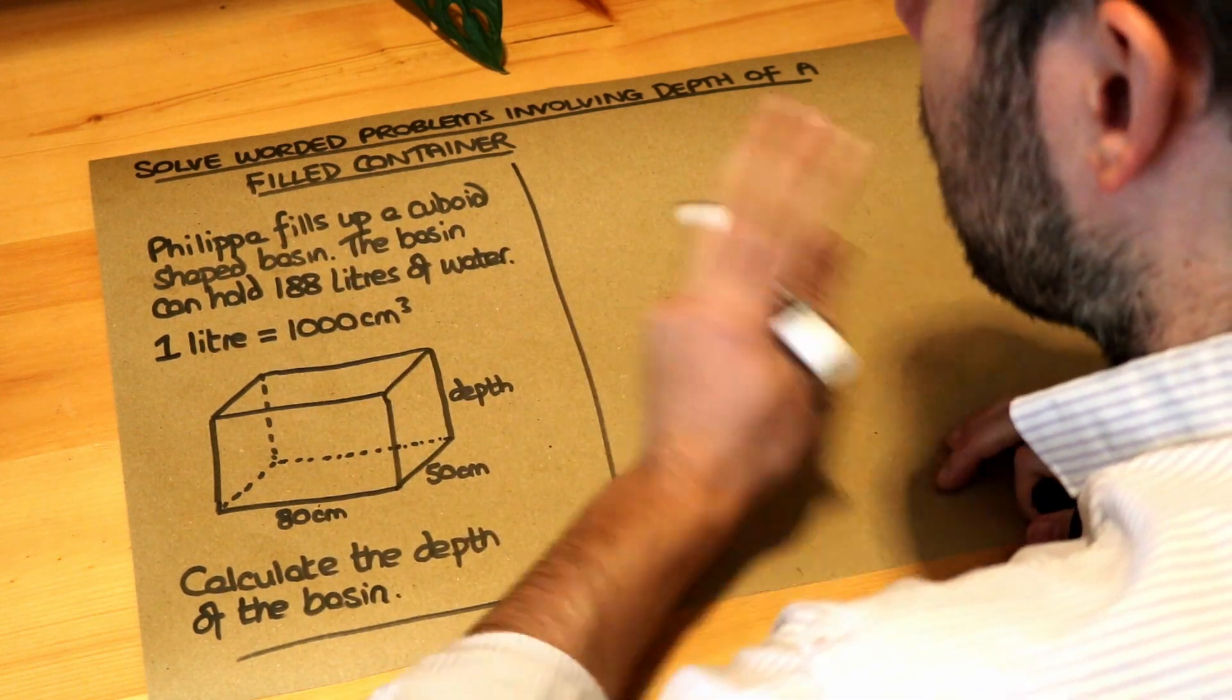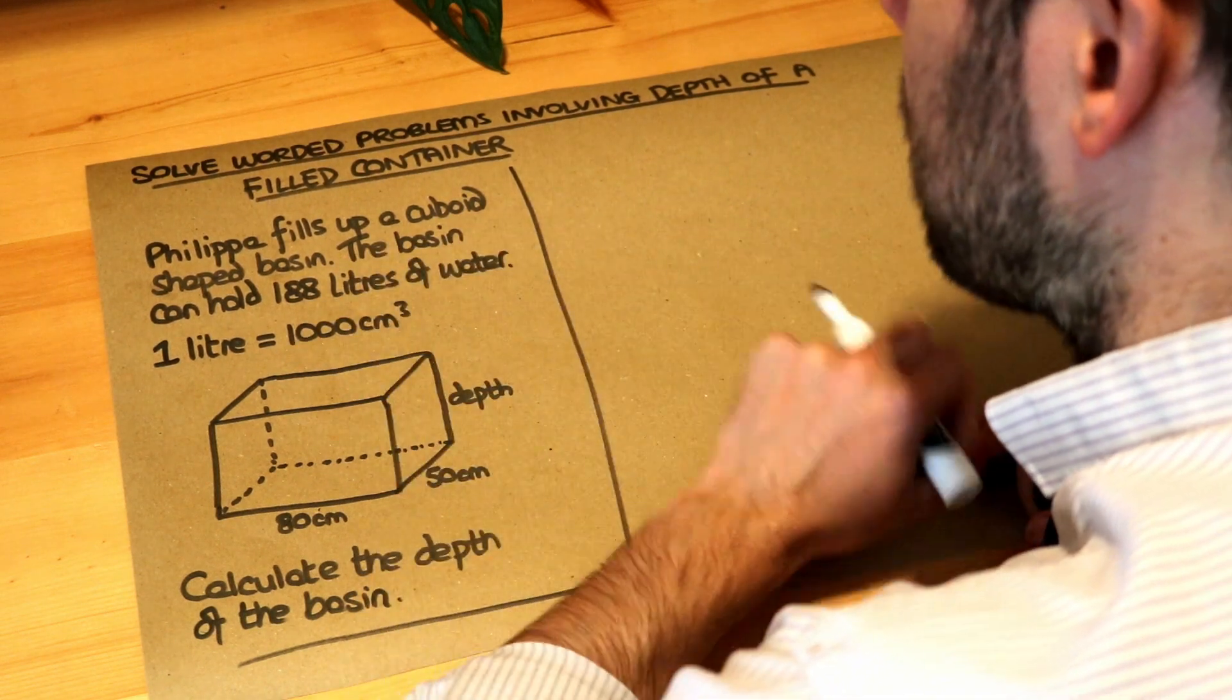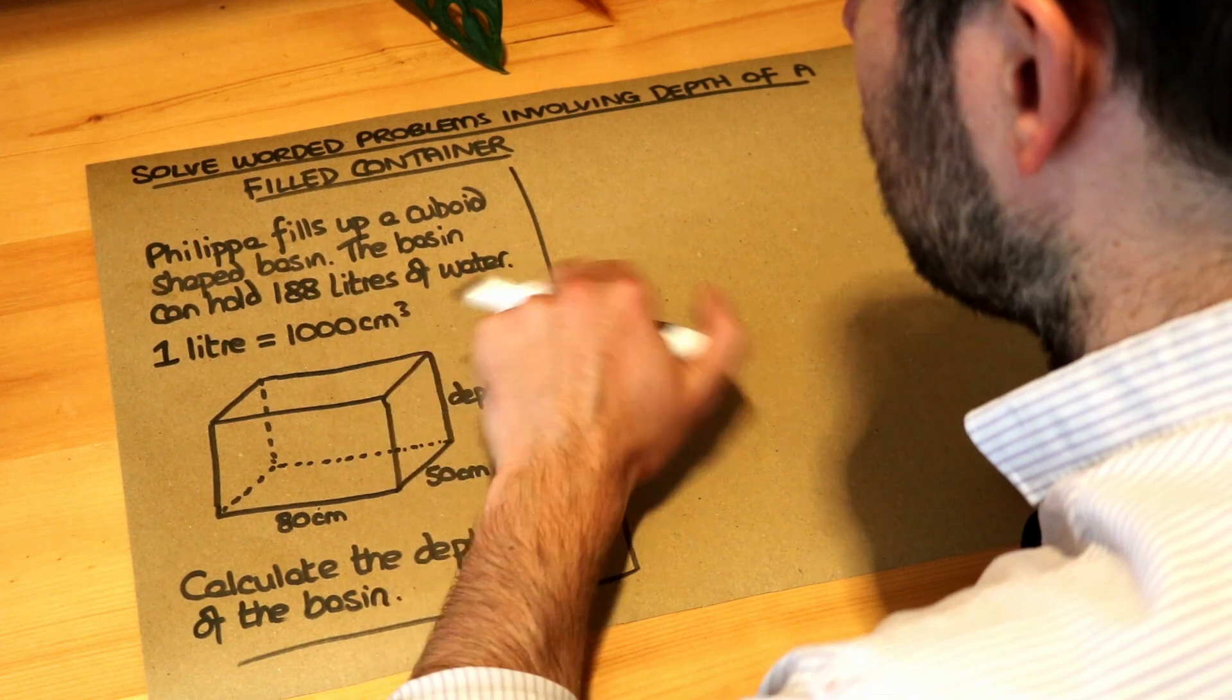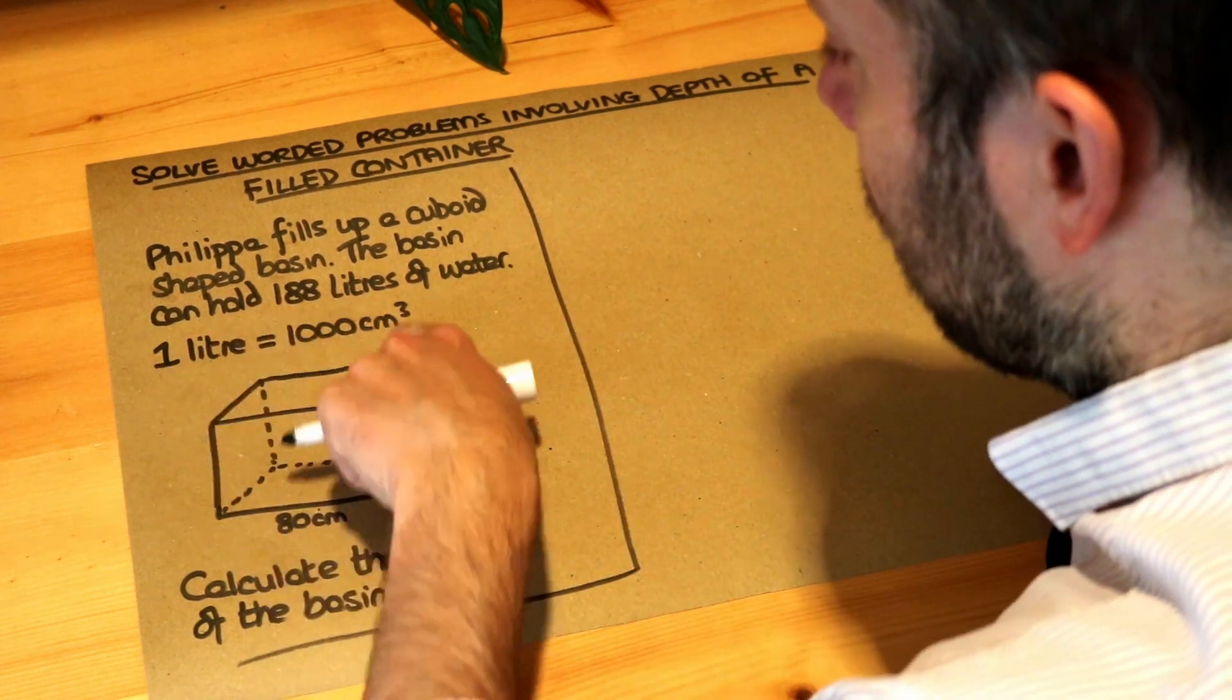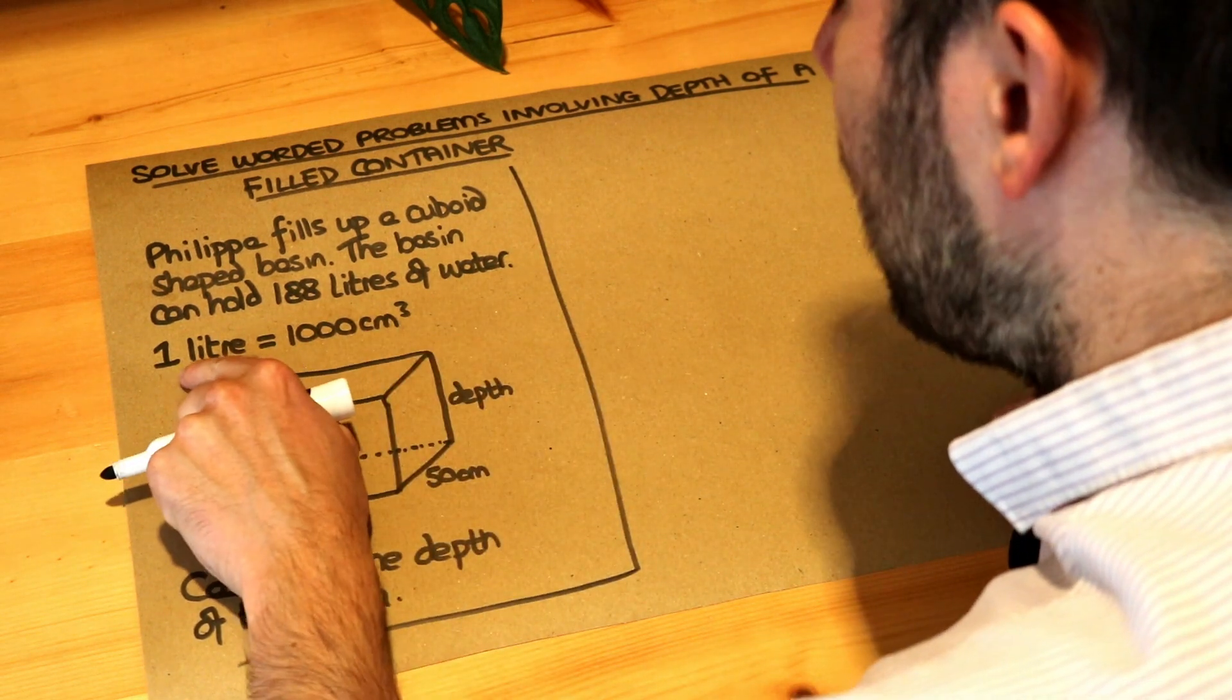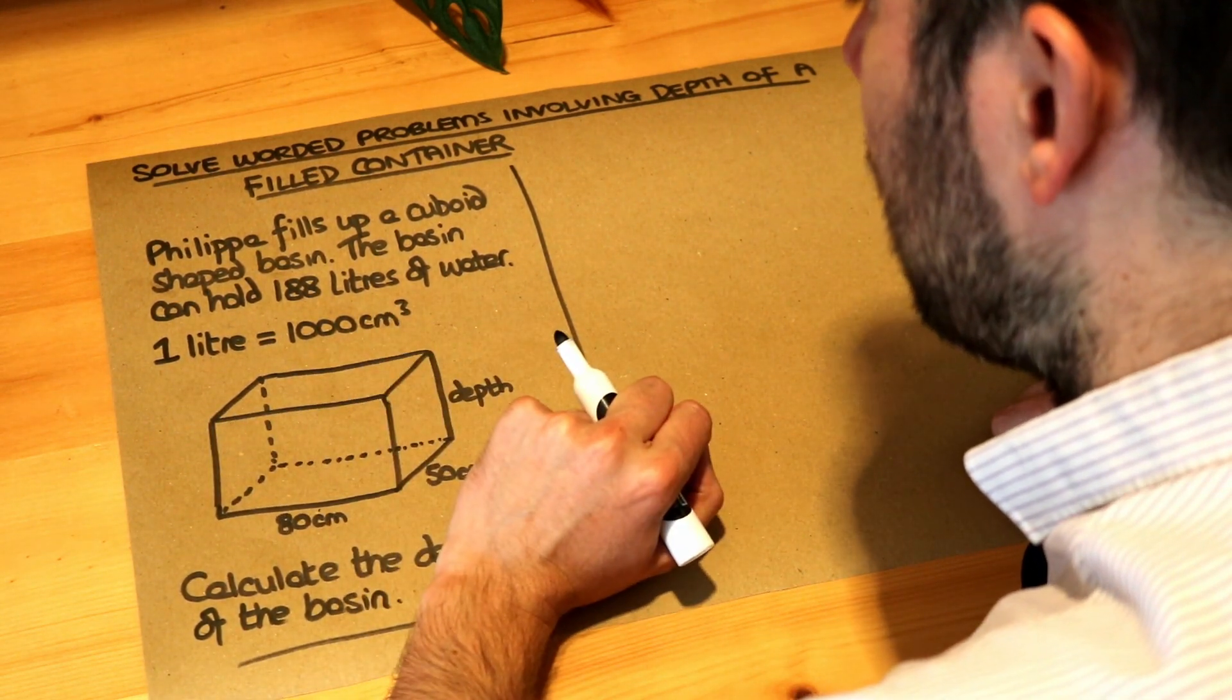Philippa fills up to the top a cuboid shaped basin. Here's the basin. The basin can hold 188 litres of water. Now we're helpfully given the conversion here between litres and centimetres cubed. One litre is a thousand centimetres cubed.